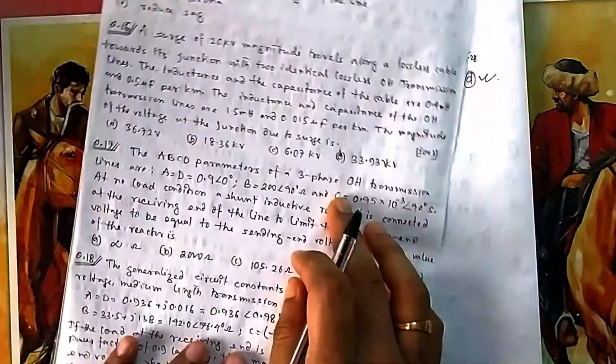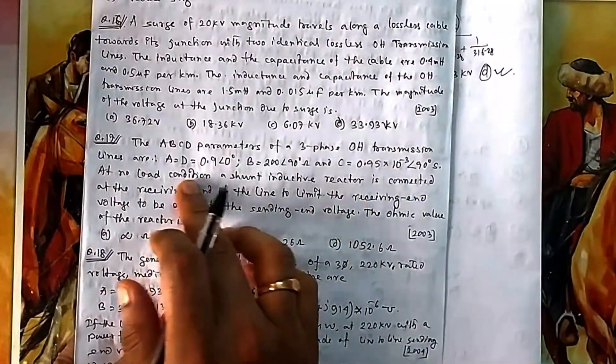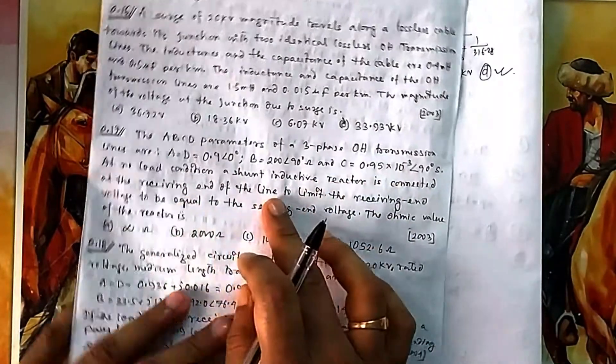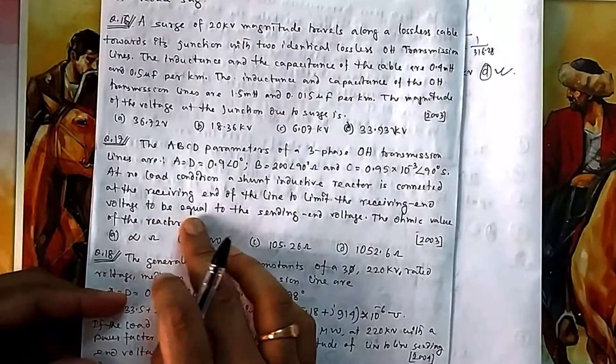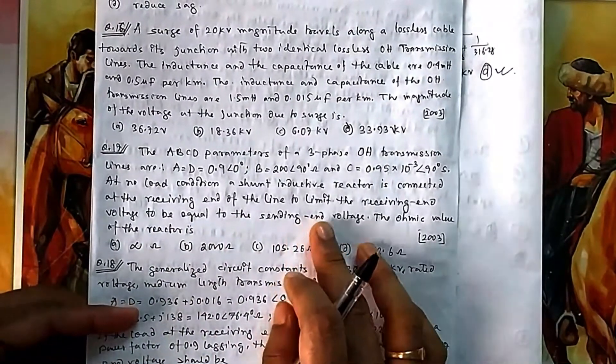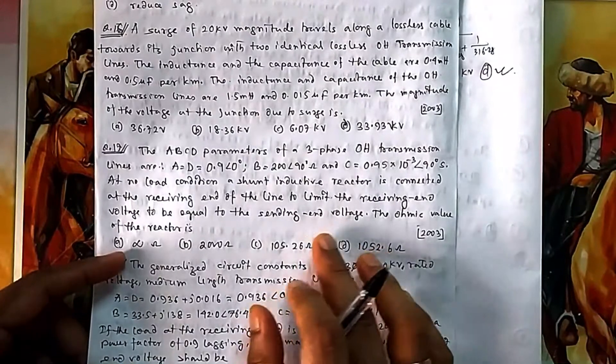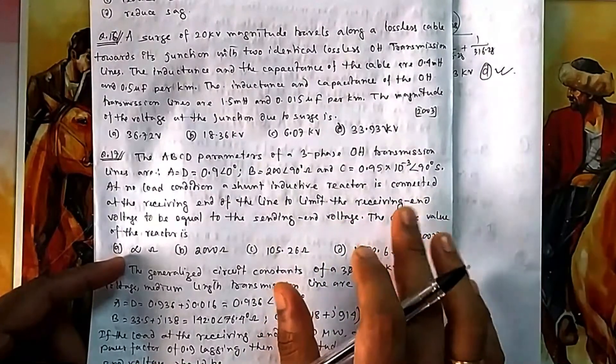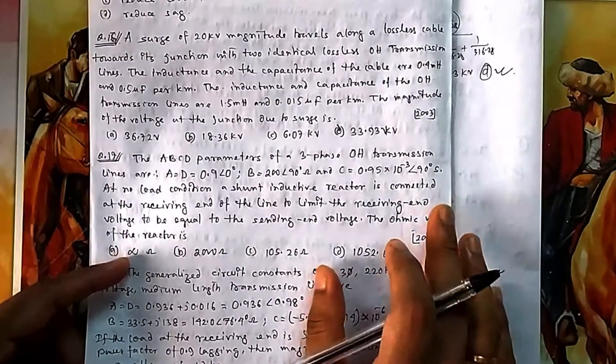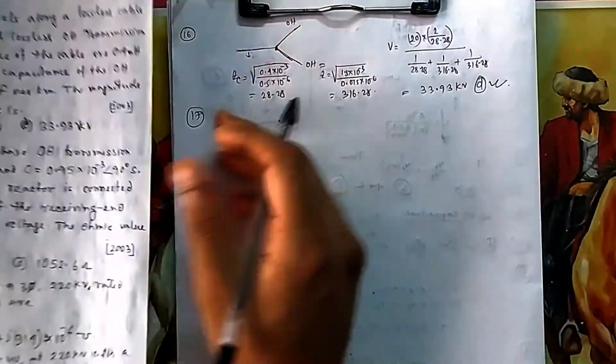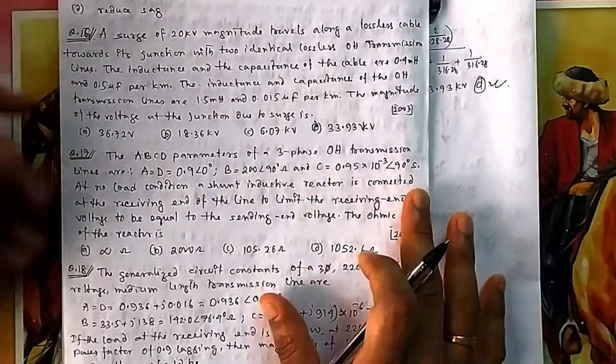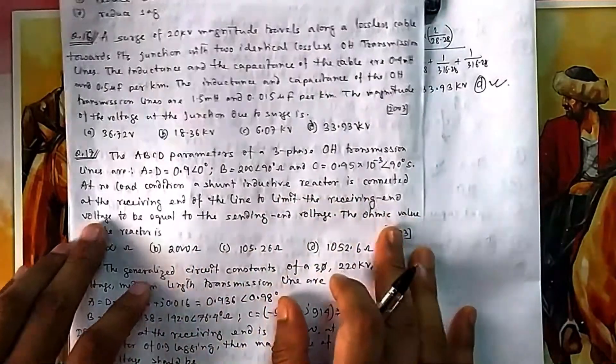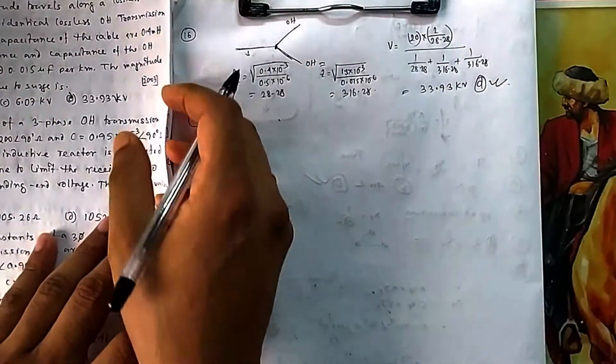Now question 17: ABCD parameters of a three-phase overhead transmission line are given. At no load condition, a shunt inductive reactor is connected at the receiving end to limit the receiving end voltage to be equal to the sending end voltage. Both magnitudes are equal. The ohmic value of the reactors are to be found.